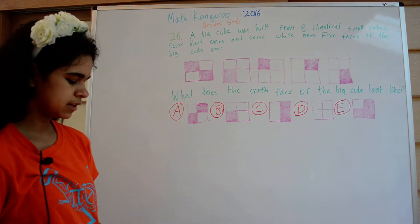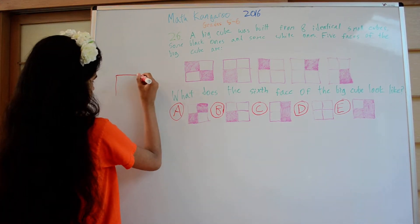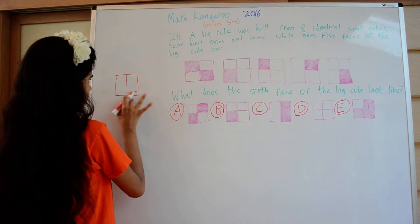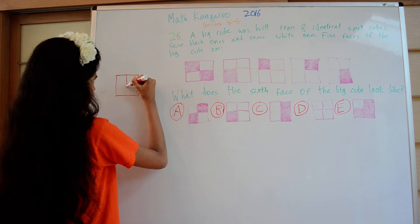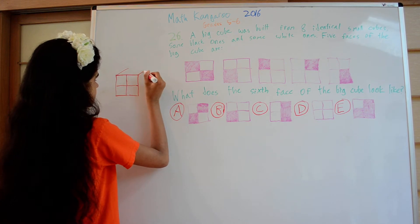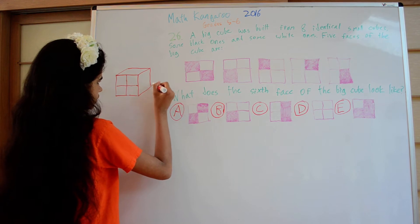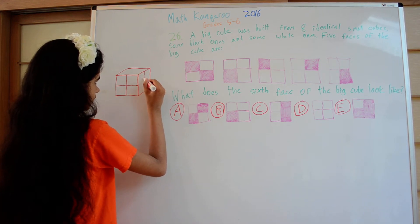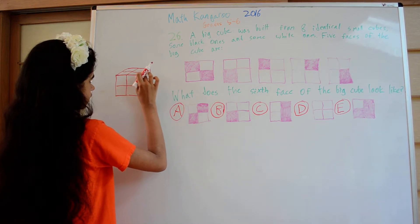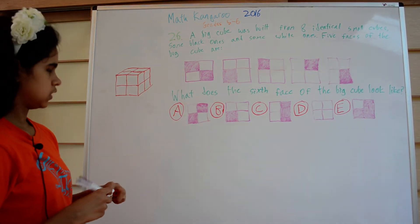We can draw a cube and start to fill in what the faces would be based on what we know, and then figure out what the sixth face would have to be. We'll divide it into the four square parts on each face, because that's what the cube would look like.